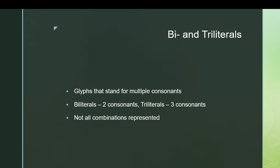Bi- and triliterals stand in for a group of multiple consonants. As you'd expect from the prefixes, a bi-literal contains two consonants and a triliteral contains three. Not all combinations of bi- and triliterals that are theoretically possible are represented by actual signs. Among the bi-literals, probably about a third to half of them have actual signs for the possible combinations of letters in a given order. The triliteral percentage is much lower than that.